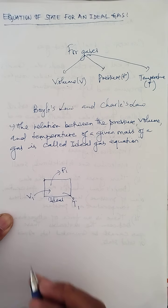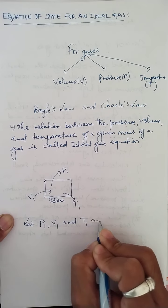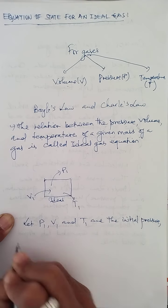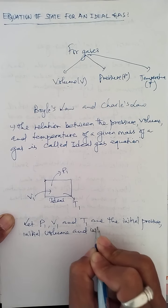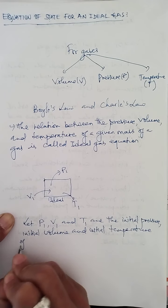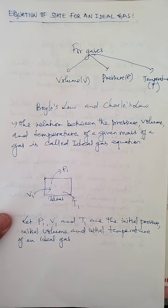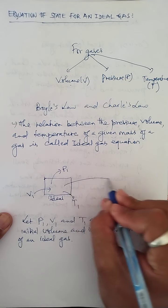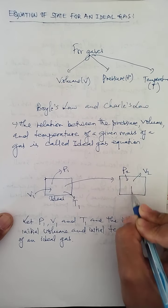So P1, V1, and T1 are the initial pressure, initial volume, and initial temperature of an ideal gas. Now I consider that this gas will change to a final pressure P2, final volume V2, and final temperature T2.